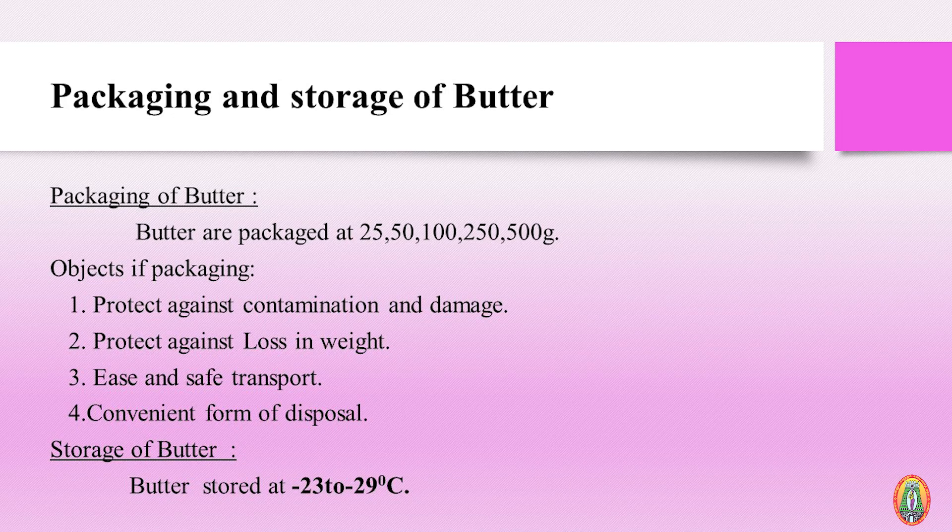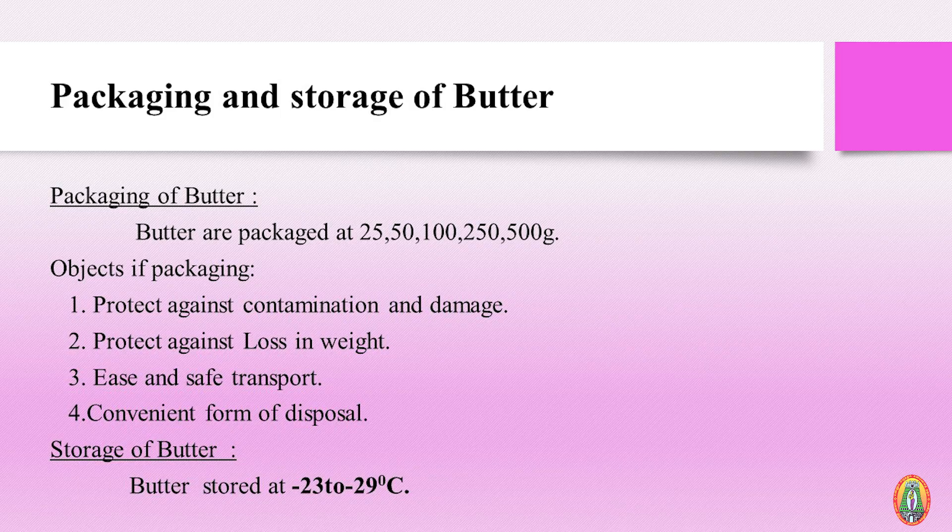Butter is stored at minus 23 to minus 29 degrees Celsius to safeguard the product and supply it to consumers. Packaging of butter is very essential as it protects the product. It is packed in many varieties — 100 gram, 200 gram, and 500 gram wraps. This prevents loss of fat, loss of water content, and contamination of the product.